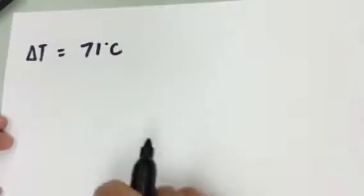A scientist burned an almond in the lab and found out that it raised the temperature of 100 grams of water 71 degrees Celsius. So that gives us our delta T.